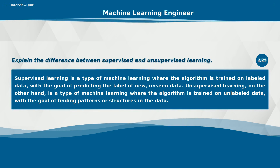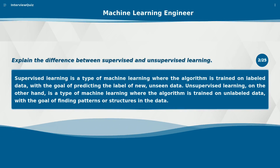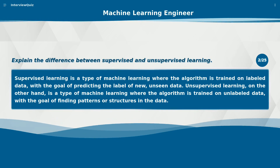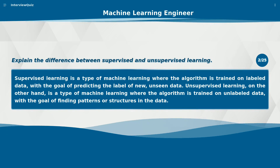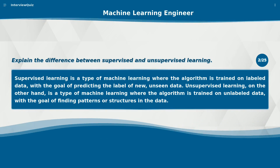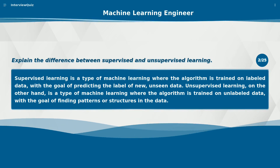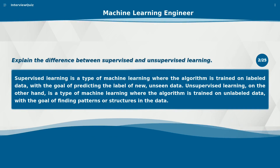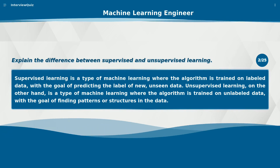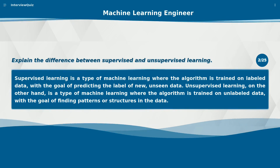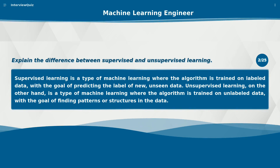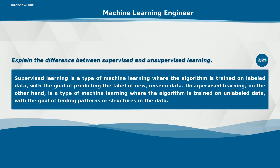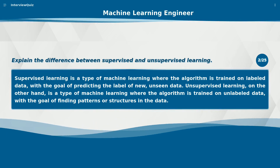Explain the difference between supervised and unsupervised learning. Supervised learning is a type of machine learning where the algorithm is trained on labeled data with the goal of predicting the label of new, unseen data. Unsupervised learning, on the other hand, is a type of machine learning where the algorithm is trained on unlabeled data with the goal of finding patterns or structures in the data.